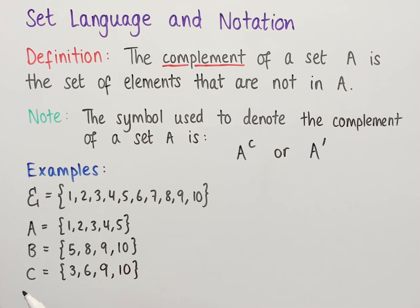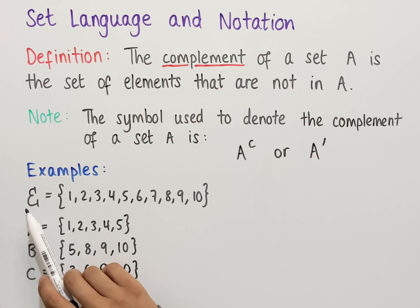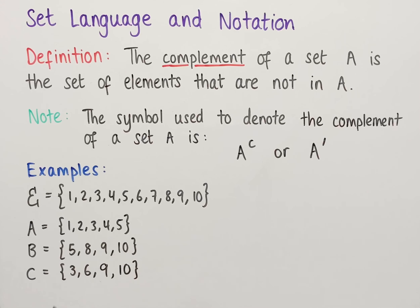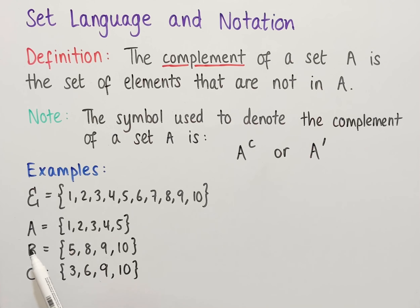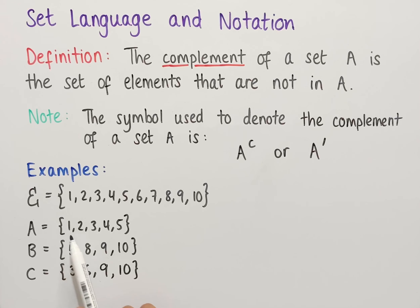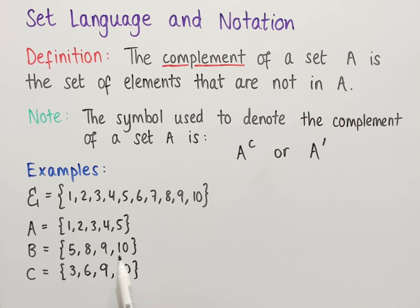Let's look at some examples where we use complement. We have the universal set, which is the numbers 1 to 10, and then set A, which is the numbers 1 to 5, set B, which is 5, 8, 9, and 10, and set C, which is 3, 6, 9, and 10.